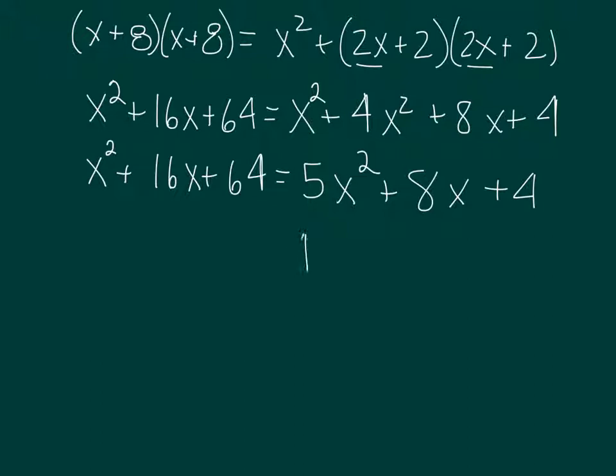If I subtract x squared, that's going to give me 4x squared. 8x minus 16x is minus 8x, and 4 minus 64 is minus 60, is equal to 0.